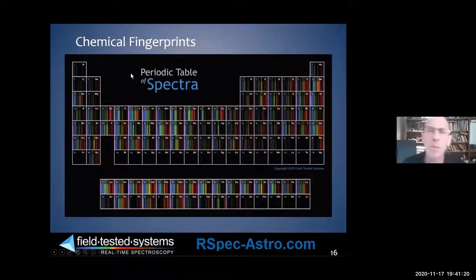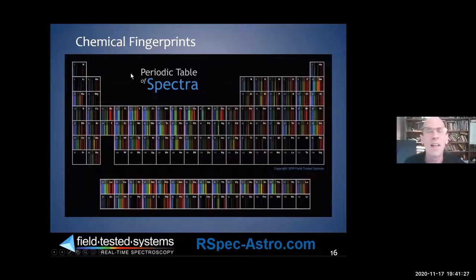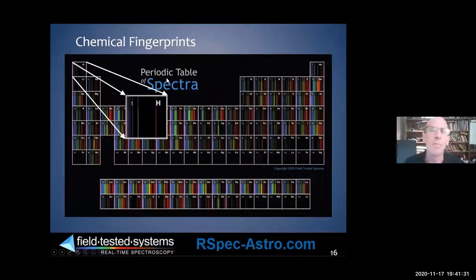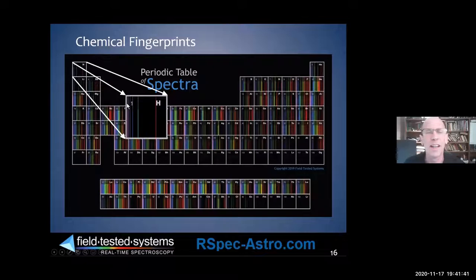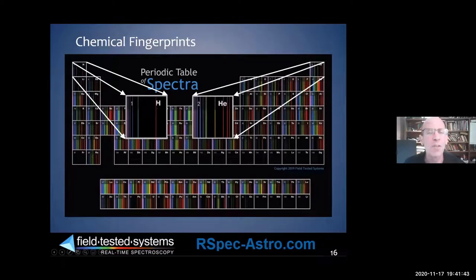Here's a periodic table of spectra — something I created a few years ago. We sell it mostly to schools and educators, though some spectroscopy amateurs buy it too. You can see hydrogen alpha in red and hydrogen beta in robin egg blue, getting characteristically closer together as we go further to the left. That's a very different spectrum than helium — that's the idea of fingerprints.